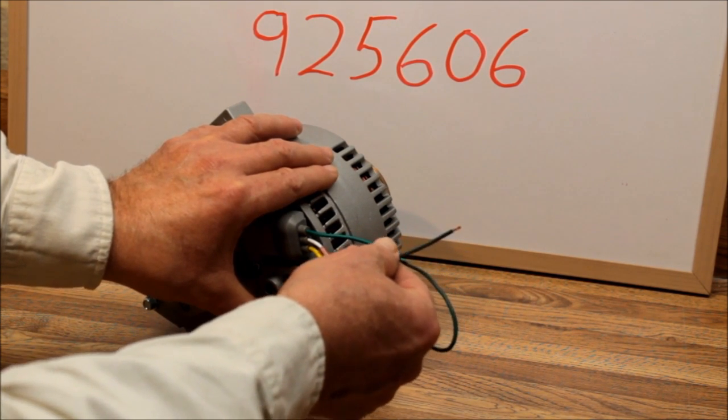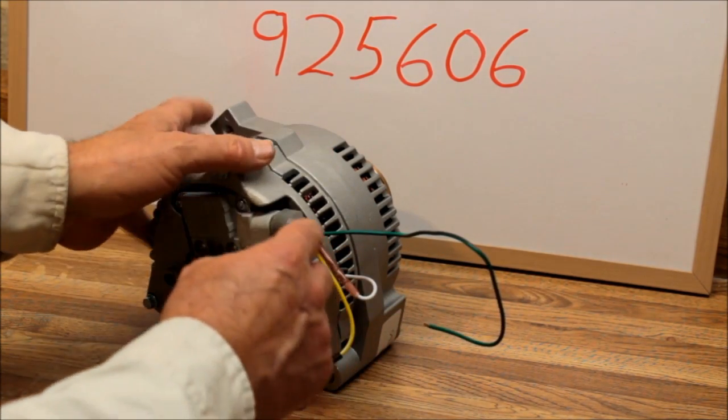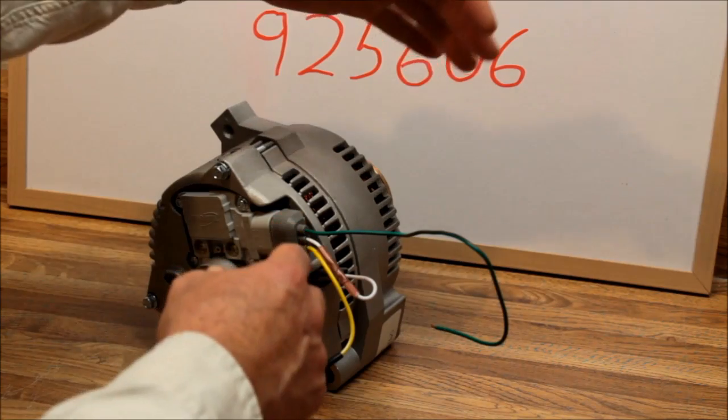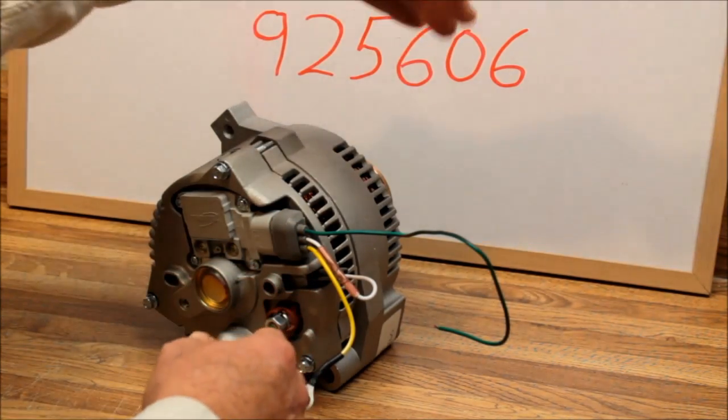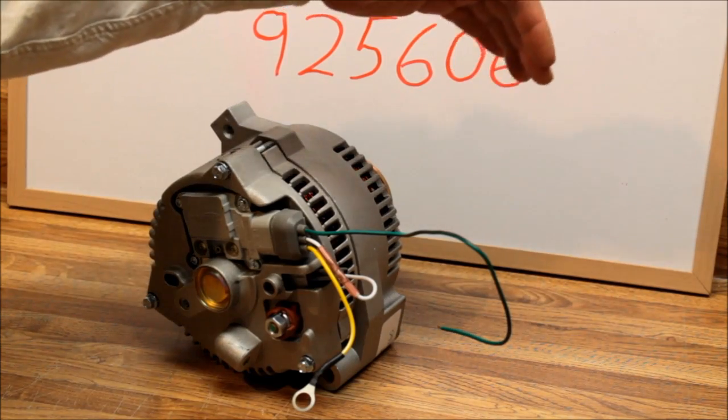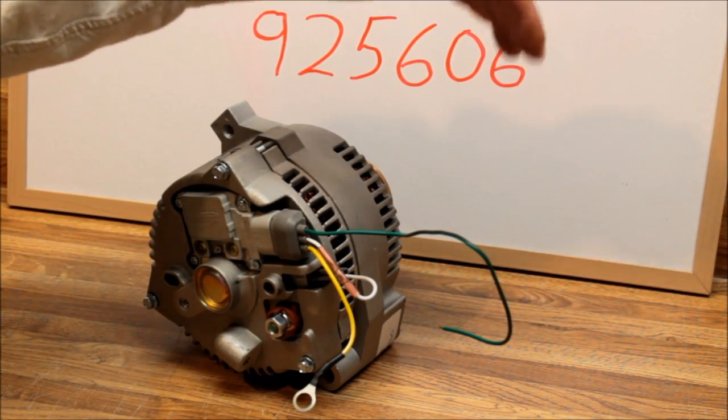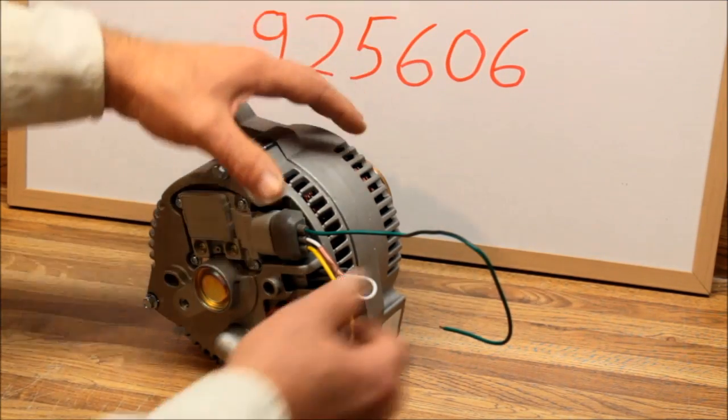Typically what you do is you pull the ignition wire off your old external regulator. On the external regulated units with the regulator on a firewall, those regulators also require an ignition wire to activate them. So you pull that ignition wire - you'll find the ignition wire, it's hot with the key on, dead with the key off. You find the ignition wire on your old external regulator.